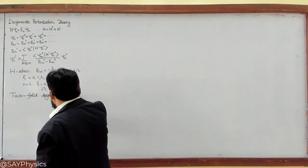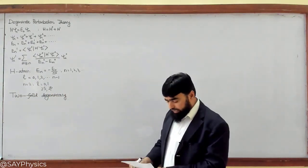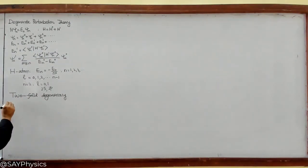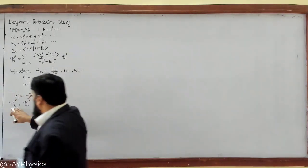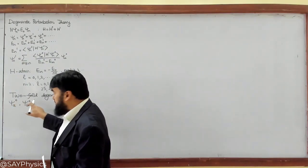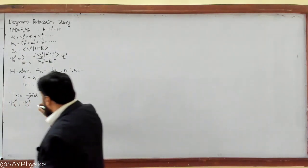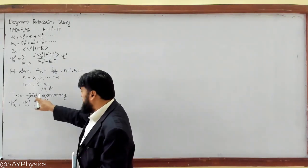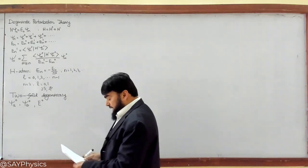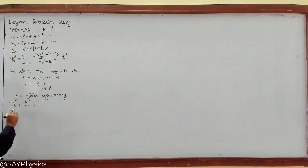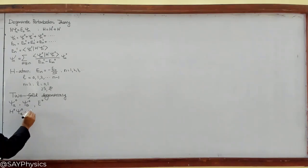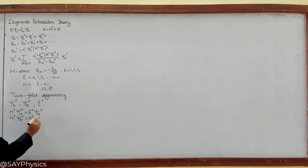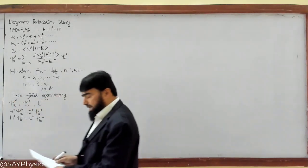Two-fold degeneracy means only two levels are considered and those two levels have the same energy. Let the two levels be psi_A^0 and psi_B^0, which are the unperturbed states — the superscript 0 means unperturbed. They share the same energy, meaning they possess the same energy E^0. I will not write the subscript N here because we are just considering two-fold degeneracy.